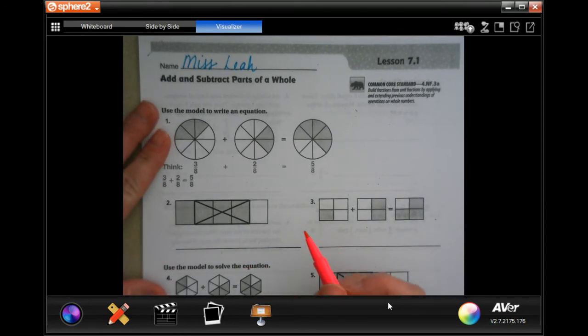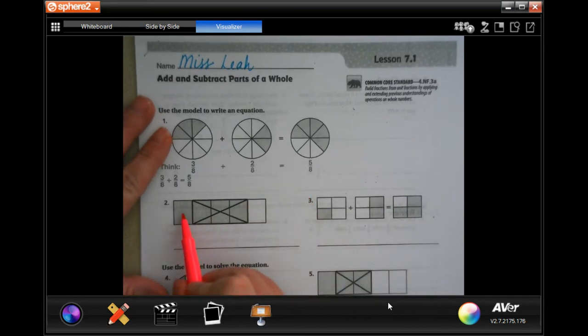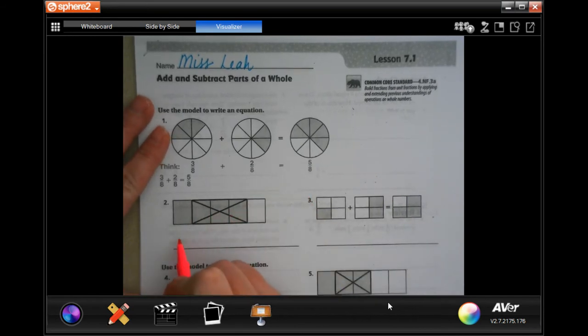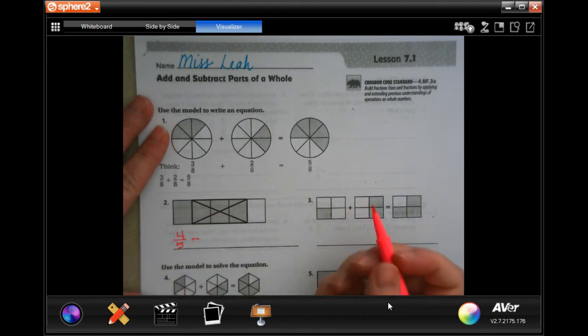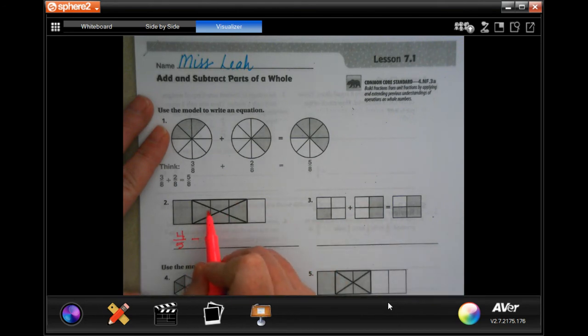So when you look at these you see one, two, three, four out of one, two, three, four, five. And they're crossing it out which means that they're taking it away. They're taking away one, two, three out of all of the five. Which means you're going to have four minus three is one and our denominator stays the same.